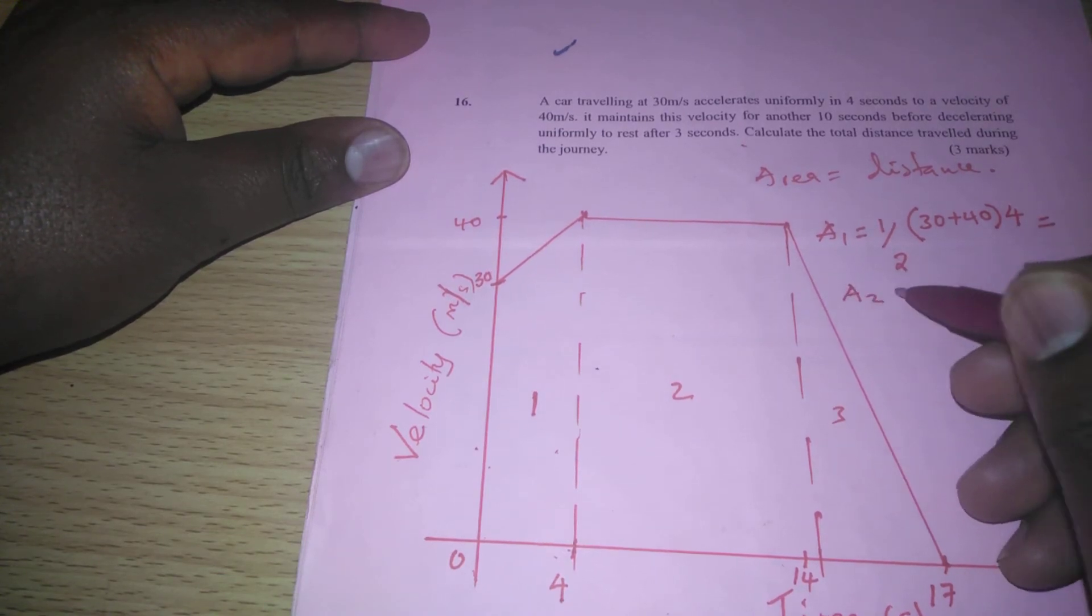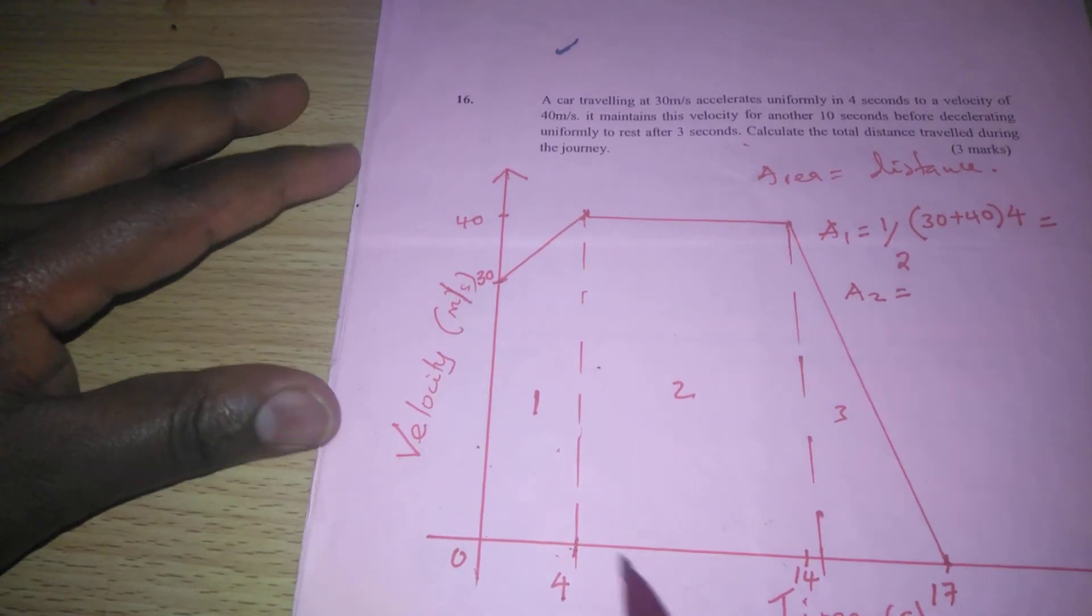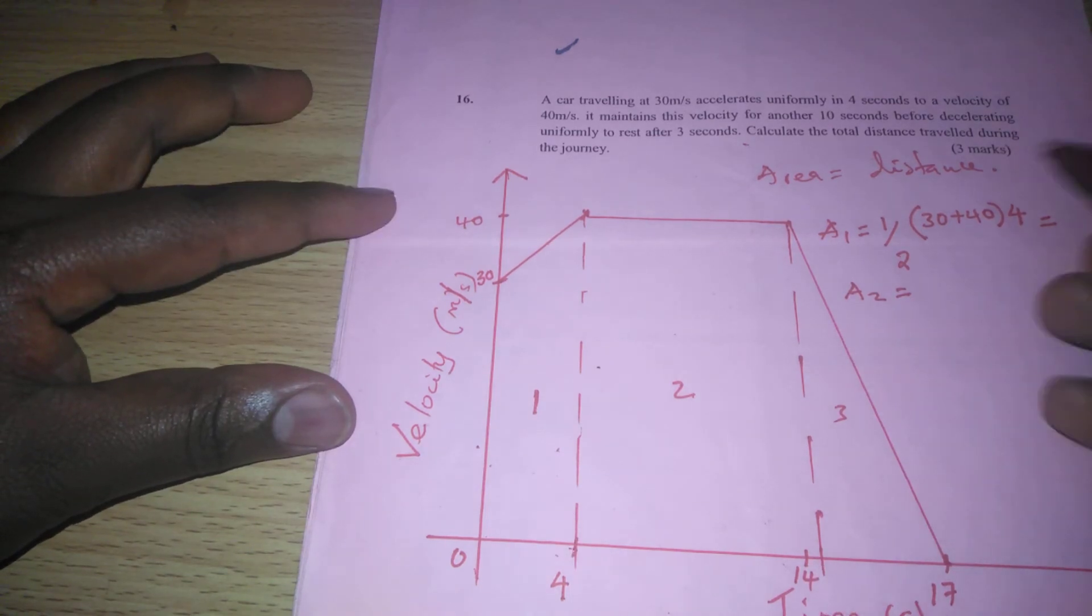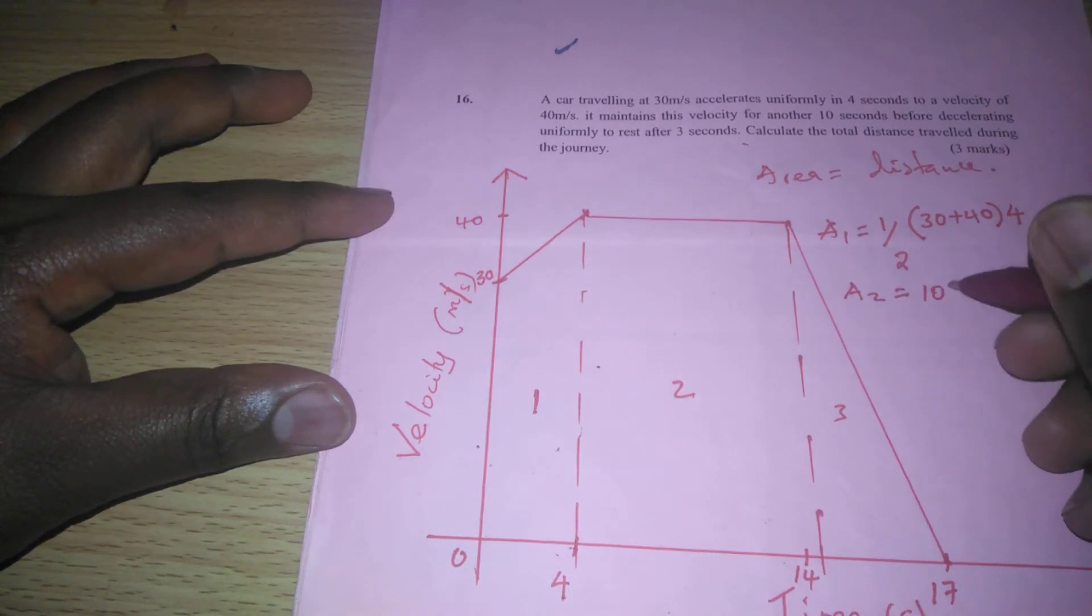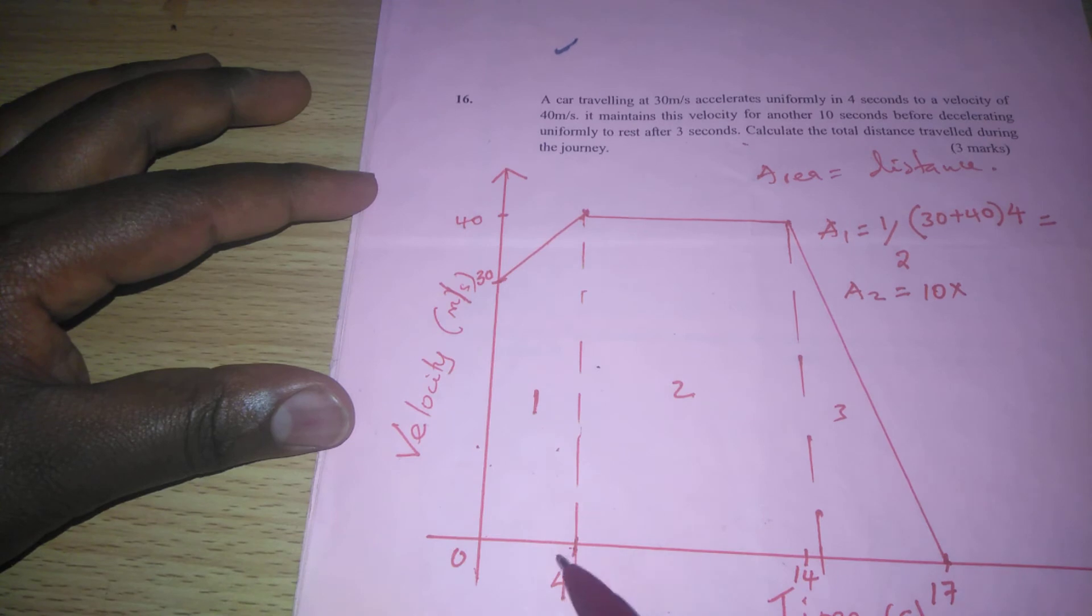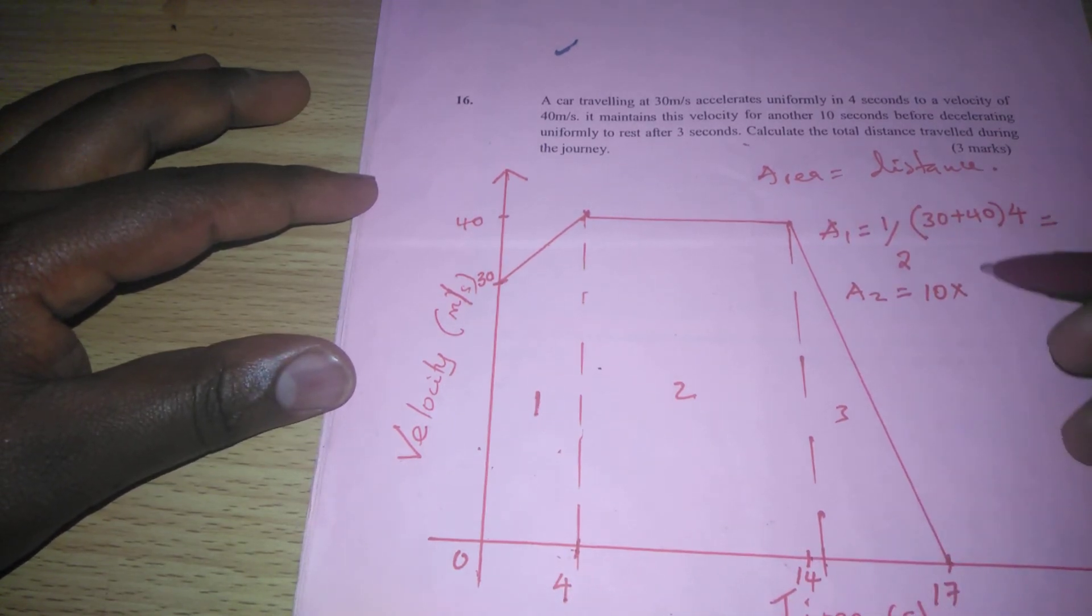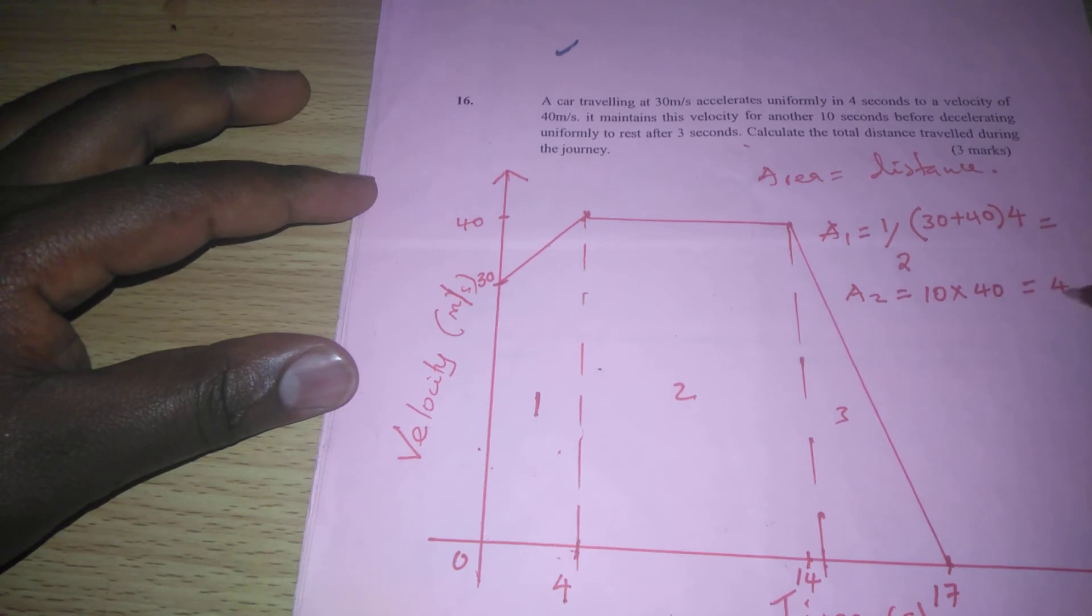The other area is rectangular. We have from 4 to 14, which is 10 times the length from 0 to 40, which is just 40. This is already 400. We don't need a calculator for that.